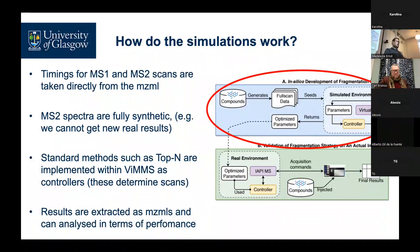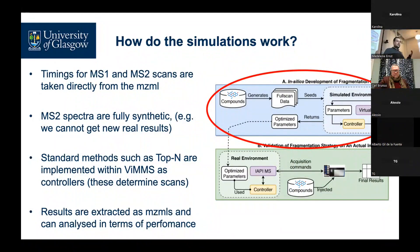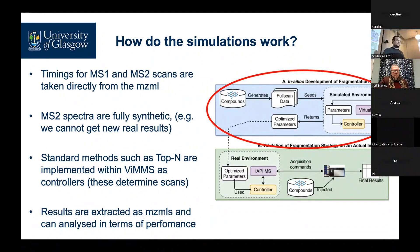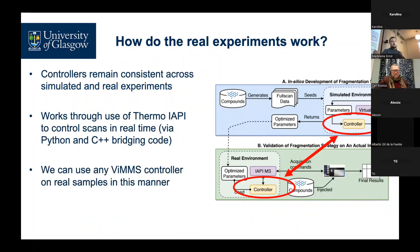The idea is essentially not to try and identify these metabolites but to test whether, in principle, if we use this method we could get spectra for them. We have Top-N implemented in VIMS as well as DIA methods, and we're developing our own. Once we run the experiment, results get extracted to mzML, so whether it's simulated or real you can still run it through some form of evaluation process. Obviously you can't look up the simulated chemicals in a database because they're not real.